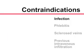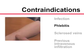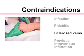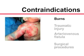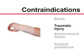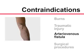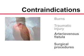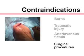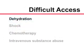Relative contraindications to inserting a peripheral catheter in a specific site may include infection, phlebitis, sclerosed veins, previous intravenous infiltration, burns or traumatic injury proximal to the insertion site, arteriovenous fistula in an extremity, and surgical procedures affecting an extremity. Other situations may preclude obtaining peripheral intravenous access — for instance, extreme dehydration or shock may render cannulating collapsed peripheral veins impossible.